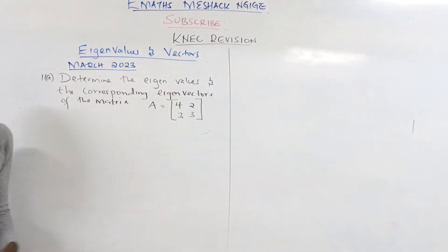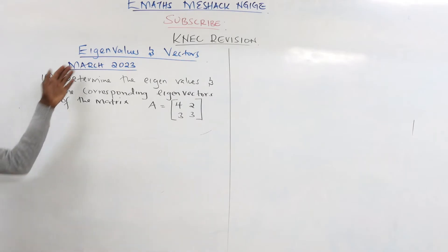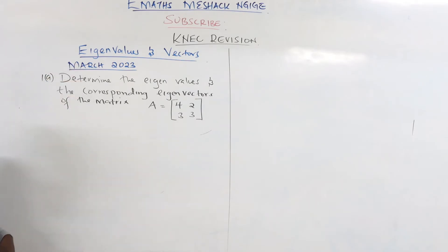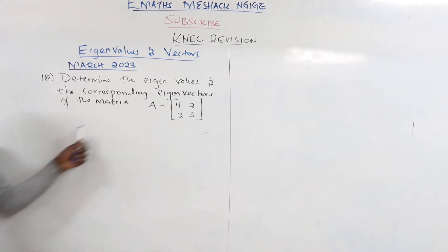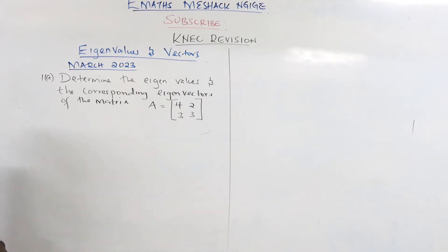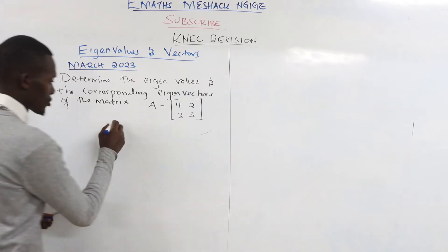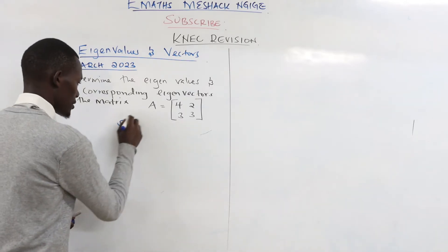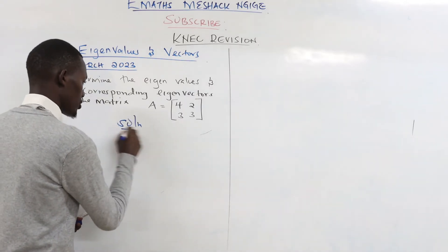We have a question from the math series 23: determine the eigenvalues and the corresponding eigenvectors for the matrix A = [4, 2; 3, 3]. Now let's check the solution for this.